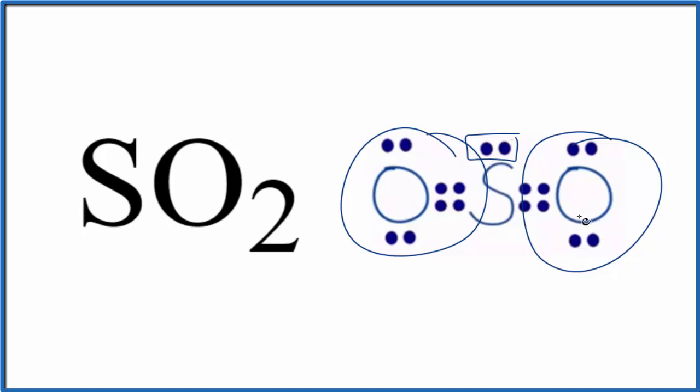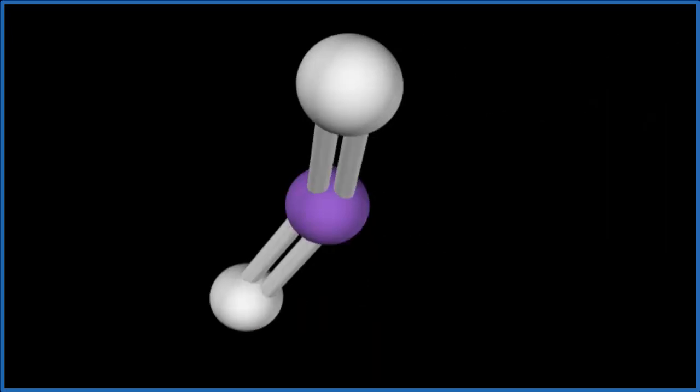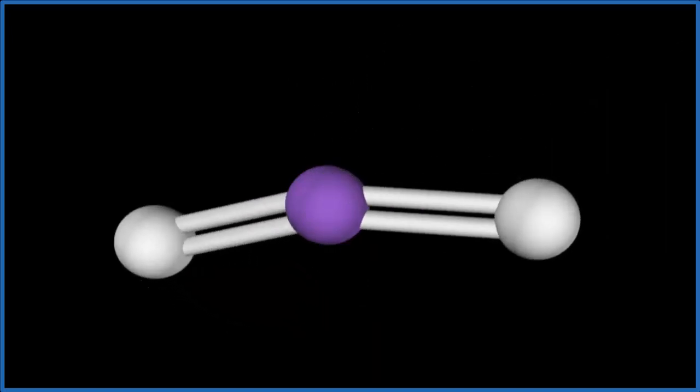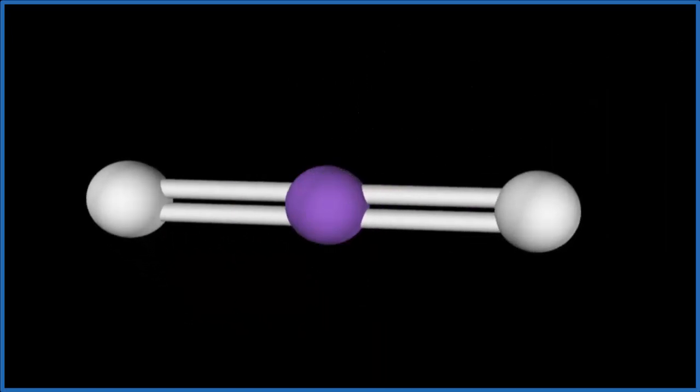Let's look at that in three dimensions. The purple will be our sulfur, and then we're going to add the two oxygen atoms. They're double bonded like this, and you see they spread out. They give us this linear molecular geometry, but remember that lone pair.